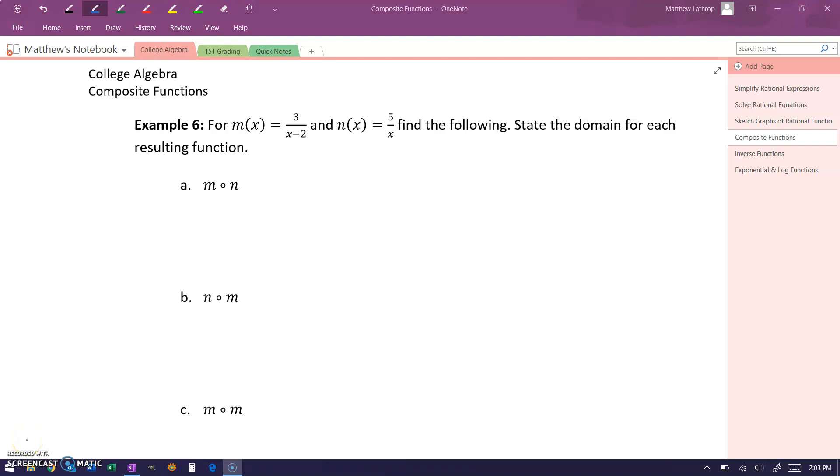Example 6 is a very similar problem, but we have some rational functions that we're dealing with this time, and we're going to end up with some restricted values in our domain.